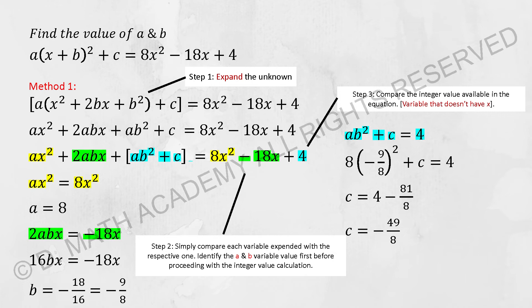So 2abx equals to -18x, it will become 16bx equals to -18x, b is actually -9/8. Whereby for c, it will now be a·b² + c equals to 4. Run the calculation, you will get your c as -49/8.